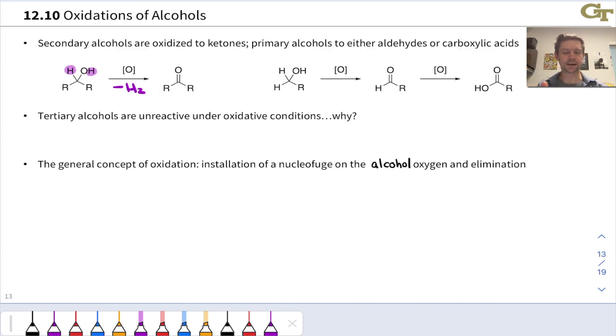If we start with a primary alcohol, loss of a single equivalent of H2 leads to an aldehyde. But further oxidation can replace that aldehyde hydrogen with an OH group going all the way to a carboxylic acid. You can see that this is two steps up the oxidation ladder to go from primary alcohol up to carboxylic acid.